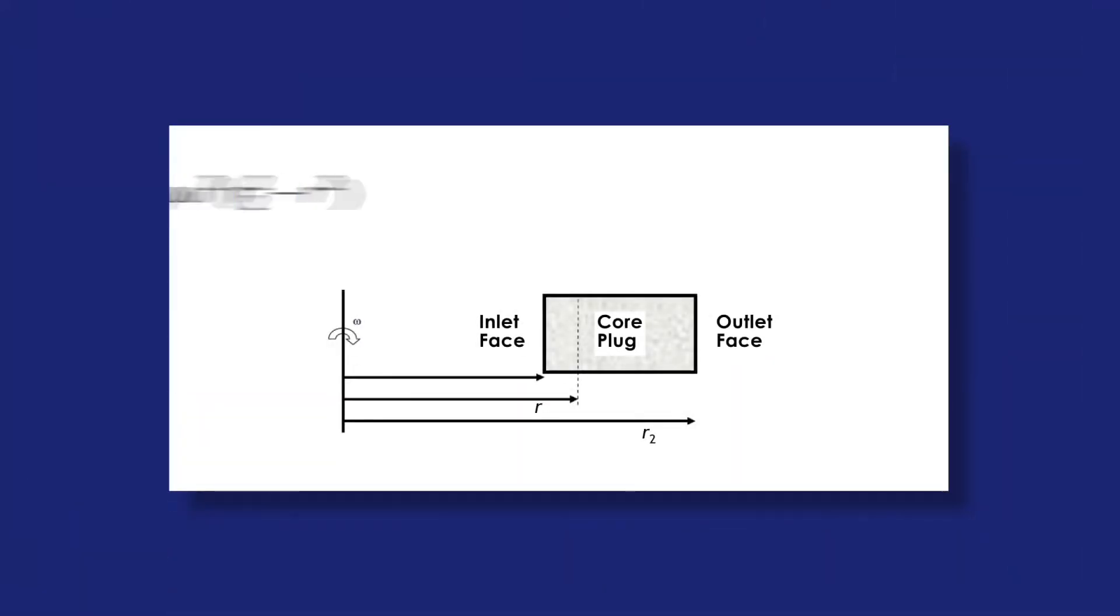The capillary pressure at any point in the core can be calculated from the spin speed, the density difference between the wetting and non-wetting fluid, the distance to the outlet face, and the chosen point.